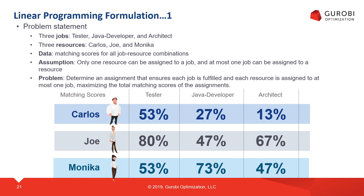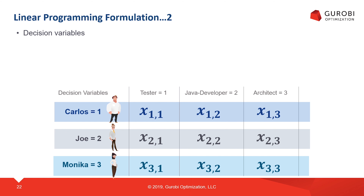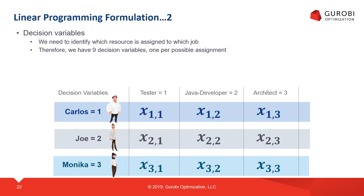Let's see how we can formulate this problem as a linear programming problem. One important component of an LP problem are the decisions we are going to make — that's why we call them decision variables. For the RAP problem, we want to identify which resource is going to be assigned to which job. The table below gives us all the possible decision variables, giving us nine decision variables expressing the possible assignments for this problem.